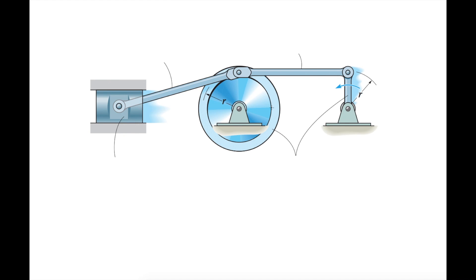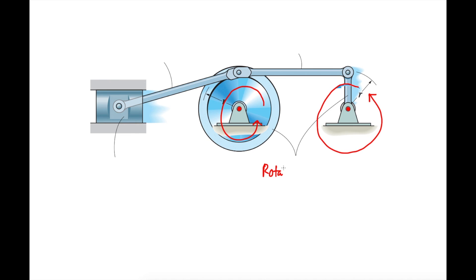Let's look at this rigid body mechanism and try to identify the type of motion of each rigid body. Looking at this arm here — it actually rotates about this center of rotation. Similarly, this disc also rotates about its center of rotation, and this small arm rotates about its own center of rotation. So the type of motion of these two rigid bodies is rotation about a fixed axis.